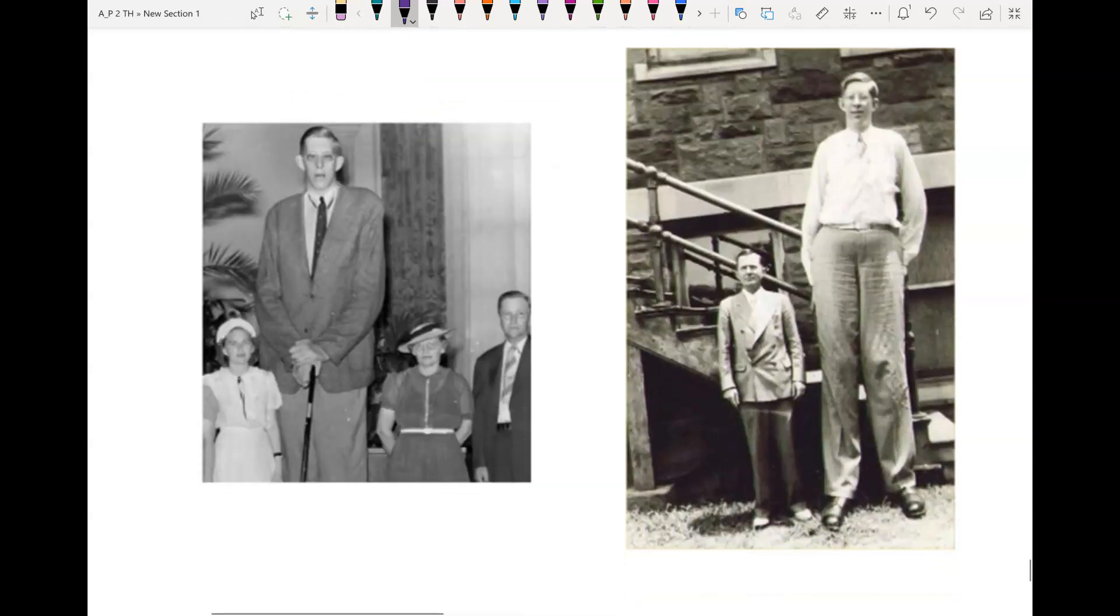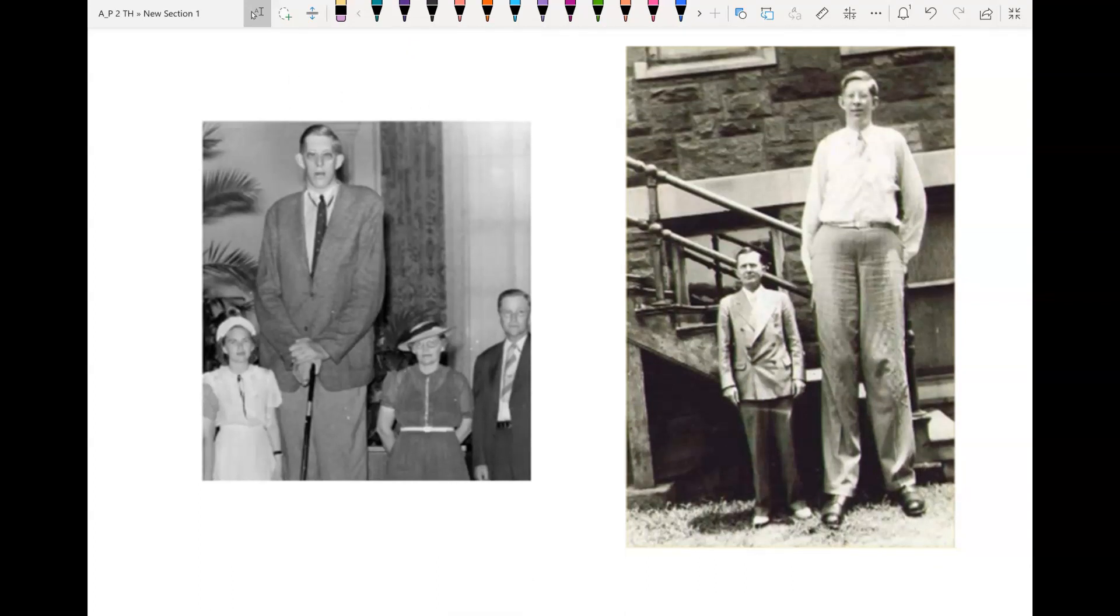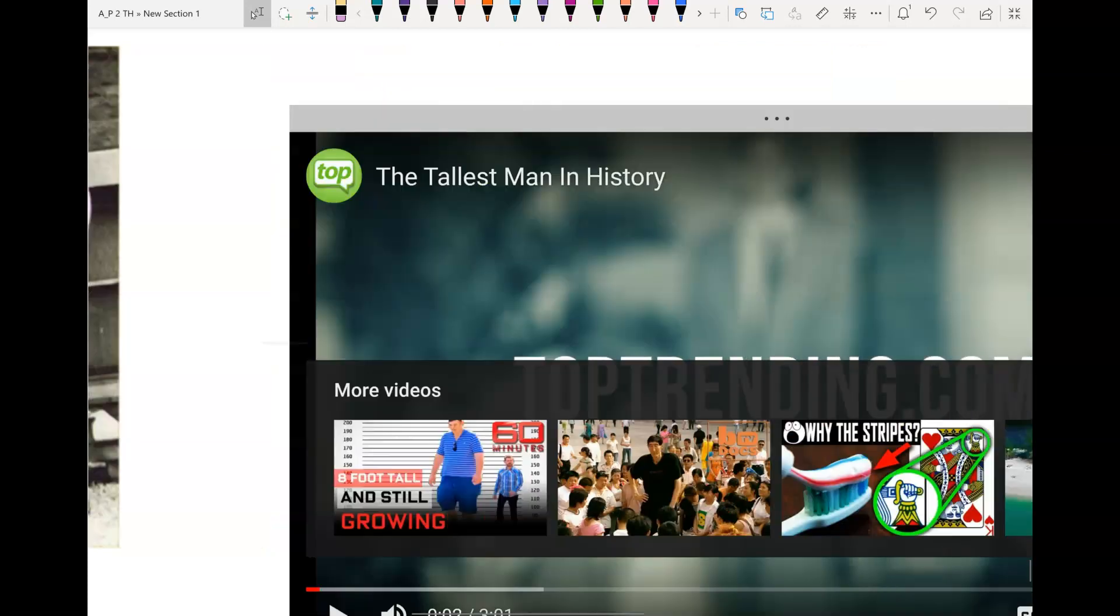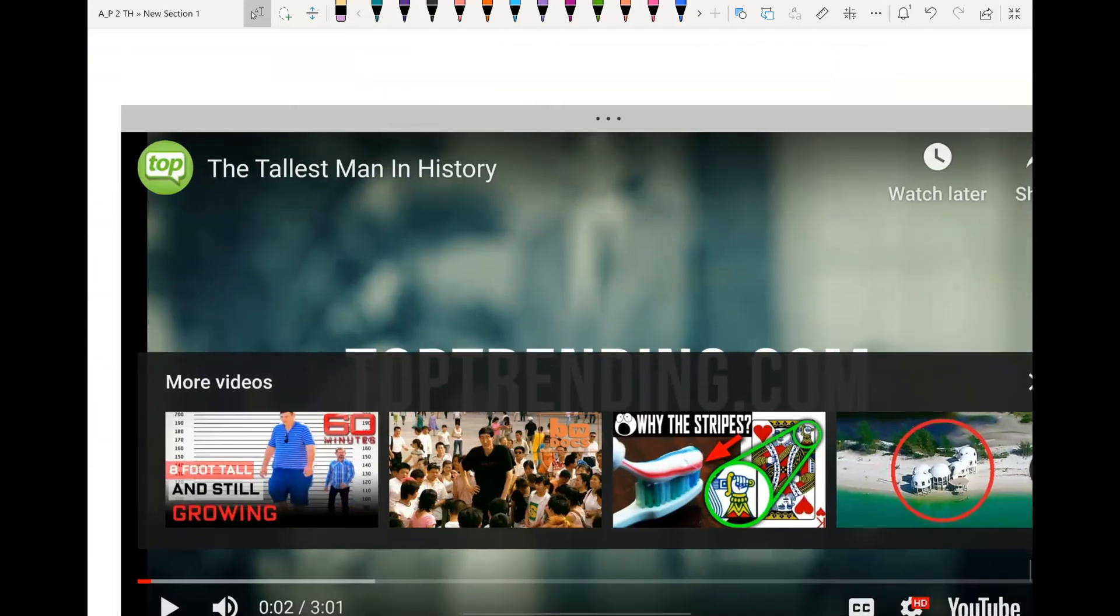The world record for the tallest person ever is Robert Wadlow. He is from Alton, Illinois. He lived in the early 1900s, and he had gigantism. So his pituitary gland secreted too much growth hormone, and he grew to be almost nine feet tall. Here is an interesting little video that tells some more about Robert Wadlow.